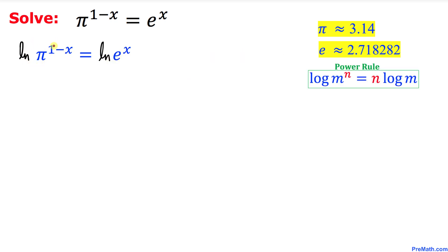Now let's focus on the left hand side and we are going to use this power rule. According to this rule this exponent we can move it all the way to the front. So therefore I can write this one as (1-x) times natural log of π equals to